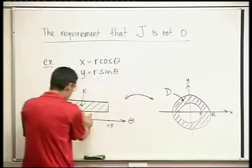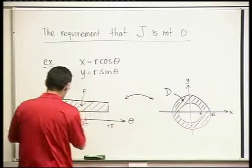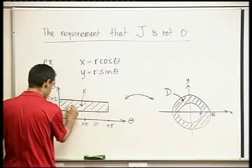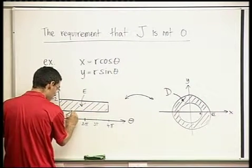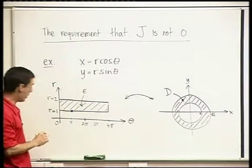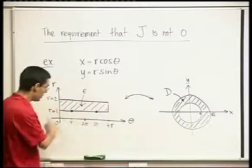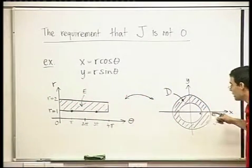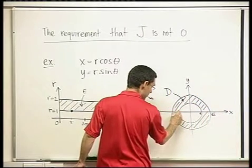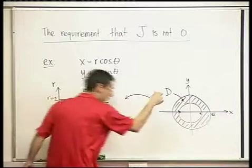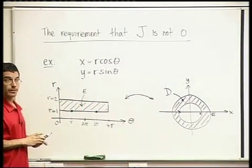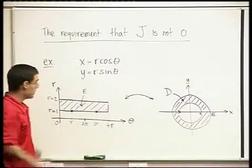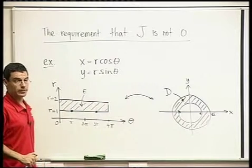Do you see that? Two different points here — for example, suppose this is pi and this is 3 pi, and let's look at the point where r equals 1. The point (1, pi) in r and theta, and this other point — these are two distinct points in E which both map to the same point here, where r equals 1 and theta equals pi, and theta equals 3 pi. These two points map to the same point. So this is an example where we can't use the theorem, because this map is not 1-to-1 on these domains.